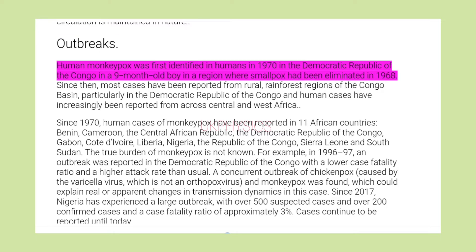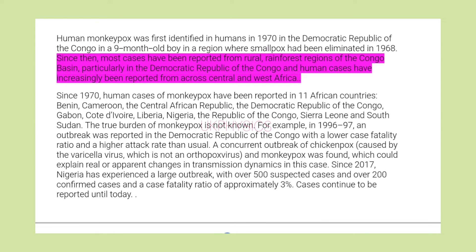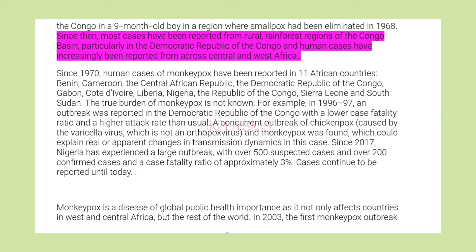Outbreaks: Human monkeypox was first identified in humans in 1970 in the Democratic Republic of the Congo in a nine-month-old boy in a region where smallpox had been eliminated in 1968. Since then, most cases have been reported from rural, rainforest regions of the Congo Basin, particularly in the Democratic Republic of the Congo, and human cases have increasingly been reported from across Central and West Africa.